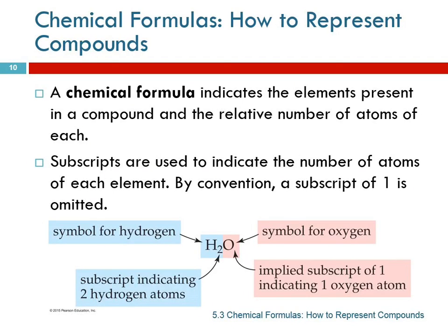We talked about representing elements and ions — now we need to talk about how we represent compounds. We use chemical formulas to represent compounds, and a chemical formula is going to show the relative number of atoms of each element.